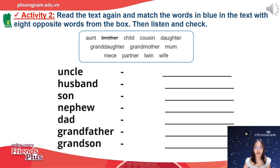The words in the box are: aunt, brother, child, cousin, daughter, granddaughter, grandmother, mom, niece, partner, twin, and wife. You will have to pause this video for 3 minutes to do this activity, and then we can come back, listen to the audio, and check your answers. Các bạn nên dừng video này lại trong vòng 3 phút để hoàn thành hoạt động này. Sau khi hoàn thành xong thì mình sẽ quay lại cùng nhau lắng nghe file ghi âm và check đáp án.